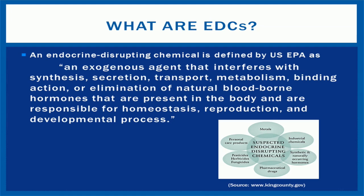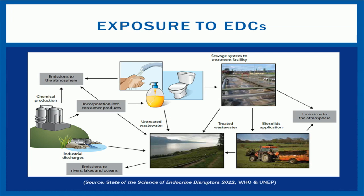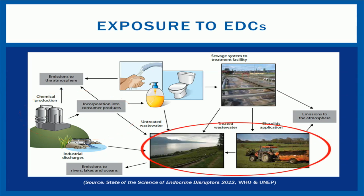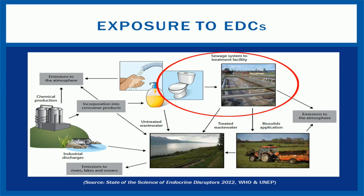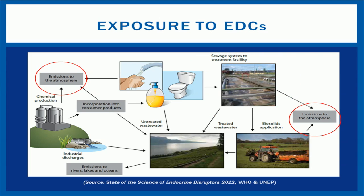Chemicals suspected of exhibiting these endocrine-disrupting effects include certain metals, industrial chemicals, synthetic and naturally occurring hormones, pharmaceutical drugs, biocides, and personal care products. There are many pathways of exposure to EDCs, as shown here. Chemical production industries incorporate chemicals into consumer products which we use for a myriad of purposes — for example, in birth control, lotions, housing materials, and cookware. Deliberate spraying of pesticides and herbicides on the fields by the agricultural industry gets washed away into our water systems when it rains, affecting aquatic ecosystems and potentially contaminating human drinking water sources and food sources. Untreated wastewater, or low standards of water treatment, may introduce these chemicals back into the environment, where humans and wildlife may interact with them. Additionally, emissions from any of these processes suspend these chemicals back into the air we breathe.